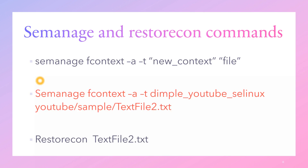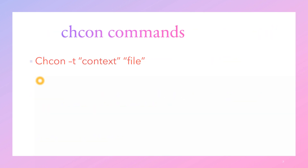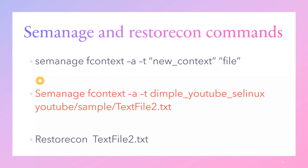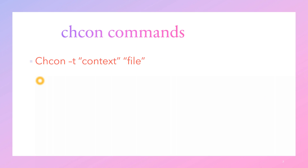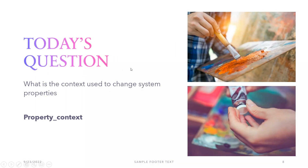All three commands — semanage, restorecon, and chcon — are basically used for changing the file context in SE Linux. With that, we come to the end of today's session. Today's question: what context is used to change the system property? We basically use property_context to change the system property. I hope today's session was informative and helpful, and you all got an idea of the use of file context, when and how it is used, the importance of SE Linux, and the different commands used to change file context. See you all soon in the next session — take care, bye.